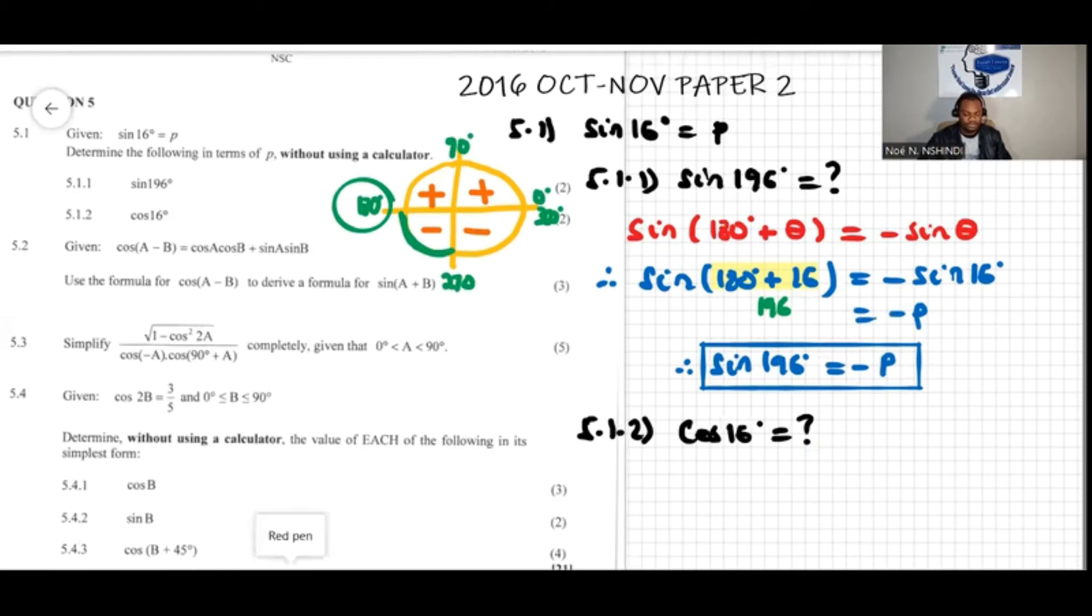Let's first draw, I prefer to draw a right angle triangle over here. So if the angle is here, 16 degrees, 16 degrees there. And then it is given that sine of 16 degrees equal to p.